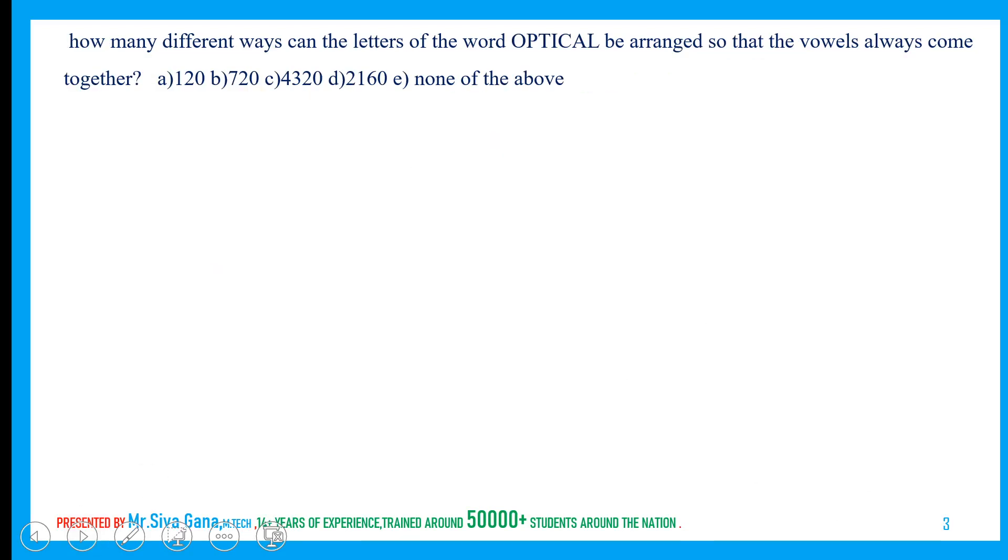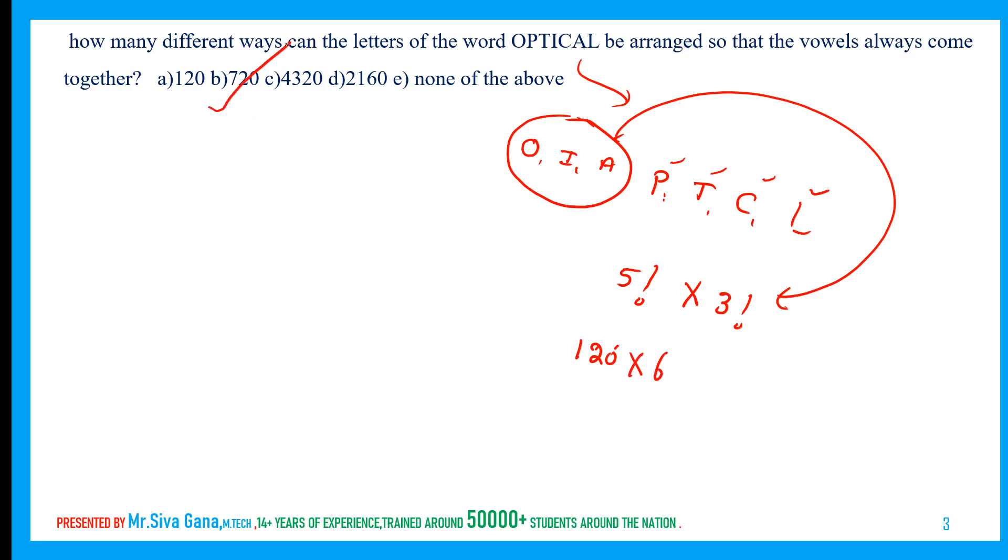How many different ways can the letters of the word optical be arranged so that vowels always come together? I am always telling you that whatever comes together make it as a group. Here vowels come together. Make OIA as one group. The remaining alphabets are P, T, C, L, so 5 groups. 5 groups can be arranged in 5 factorial ways, and these O, I, A can be arranged in 3 factorial ways. 5 factorial is 120, 3 factorial is 6, so the answer is 720. Remember, whatever comes together make it as a group.